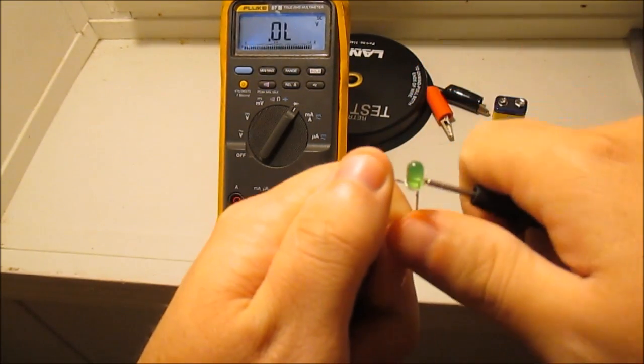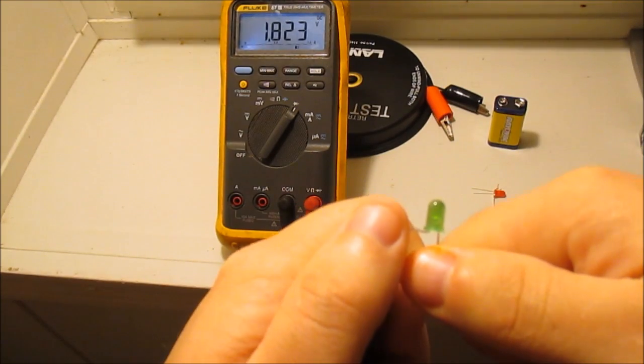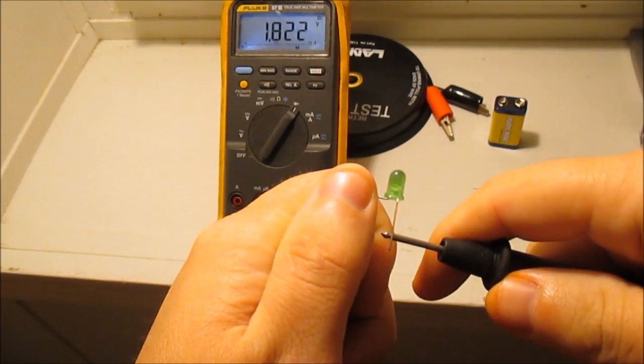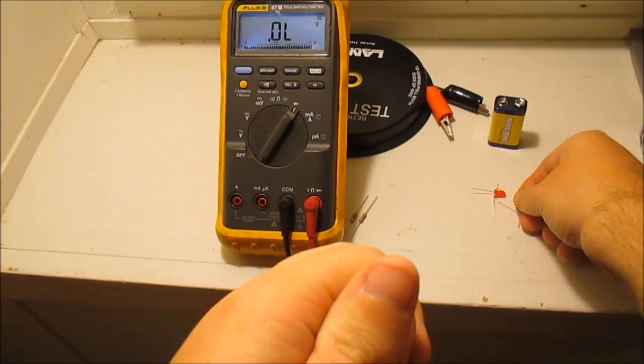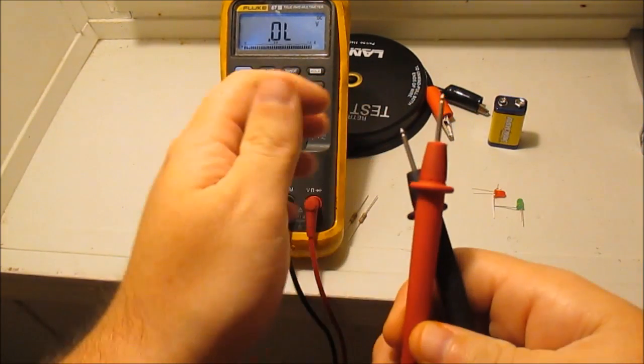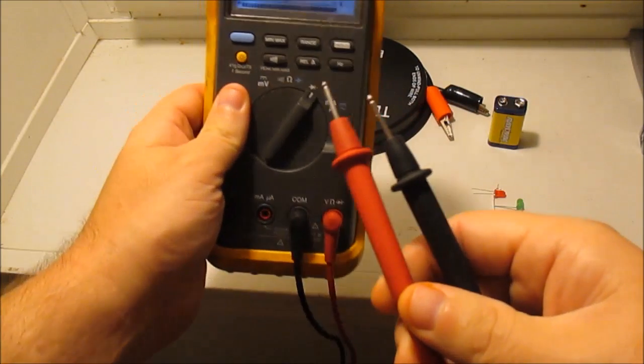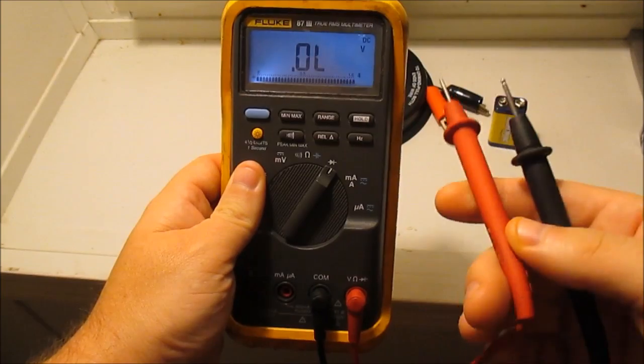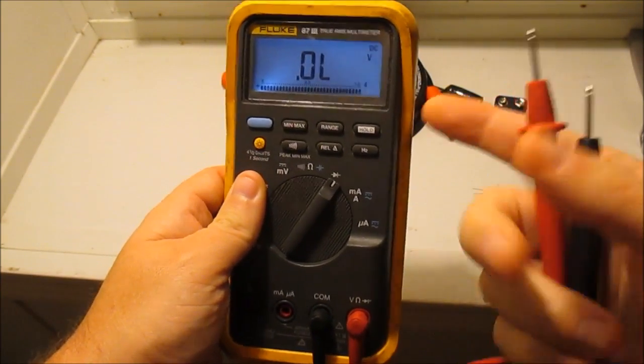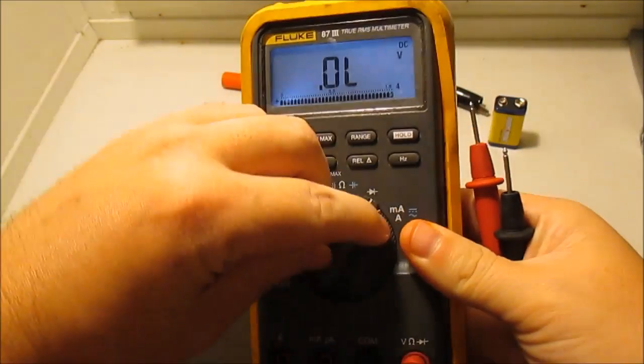So that's one way you can check it, and these LEDs are both good. As far as the meter goes, you just put it on the diode check and it'll read a voltage and the light will come on. You switch leads and it won't come on. Simple enough.